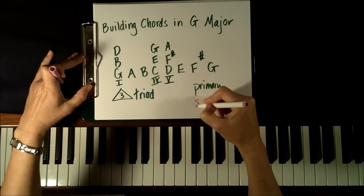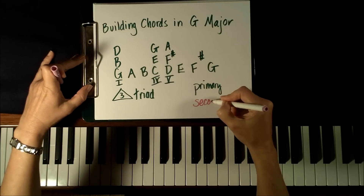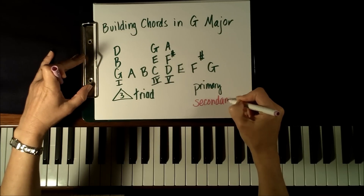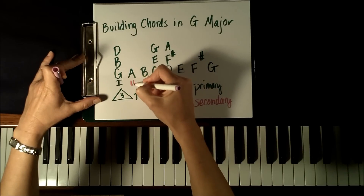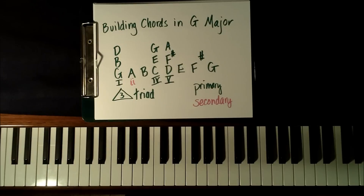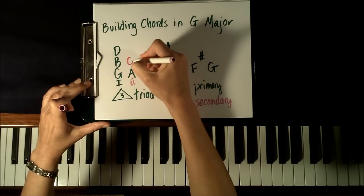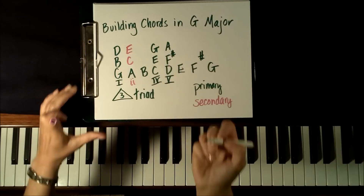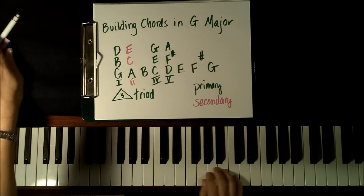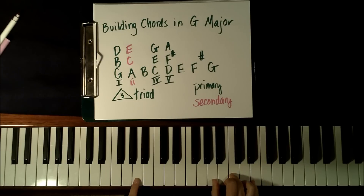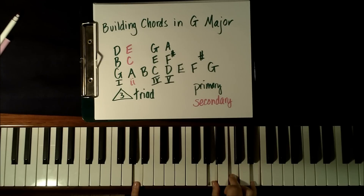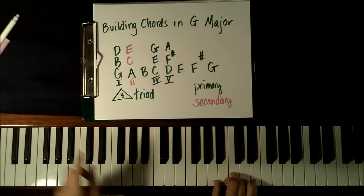The next group of chords that we can play in any key are the secondary chords. The secondary chords are the remaining three that are found in the key of G. The first one is the II chord. We begin by starting on A, we skip a note to C, and we skip another note to E. So here we have the notes A, C, and E. And if we play them, we'll see that the sound of this chord is minor. If you don't know the difference between major and minor chords, please check my video, What is a Chord?